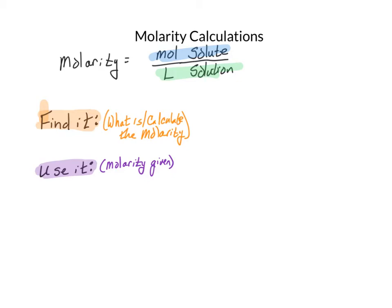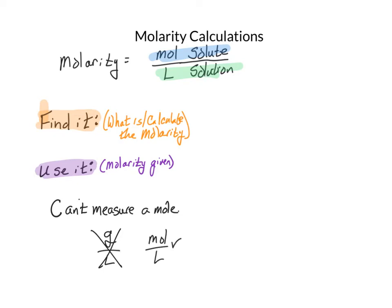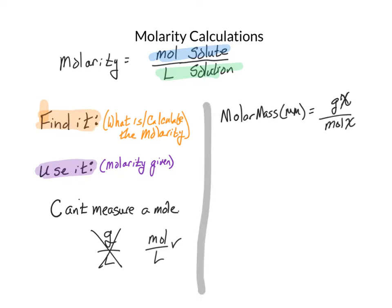One of the biggest challenges with molar calculations is that we're looking for moles, yet in the laboratory we can't measure a mole directly — we can weigh a mass. If we divide grams by liters, that doesn't give us molarity. We need to convert from grams to moles using the molar mass. Also, we often measure volume in milliliters rather than liters, so you need to convert: move the decimal three spaces back to get liters from milliliters.